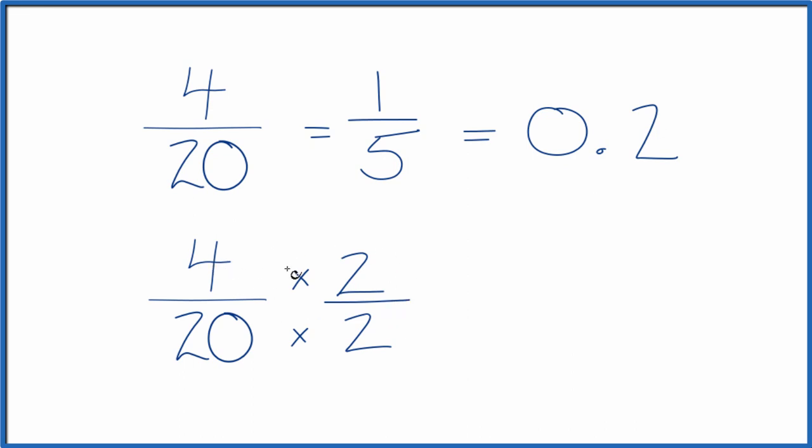But now, 4 times 2 equals 8. 20 times 2 is 40. So 8 40ths, that's an equivalent fraction for 4 20ths.